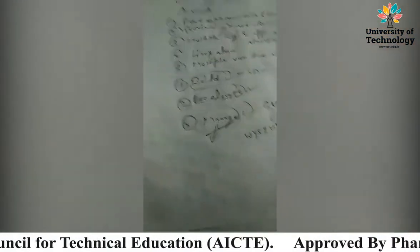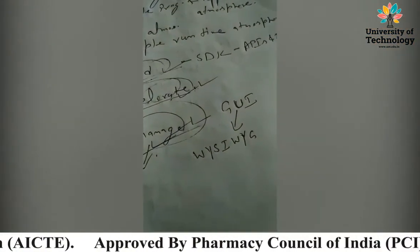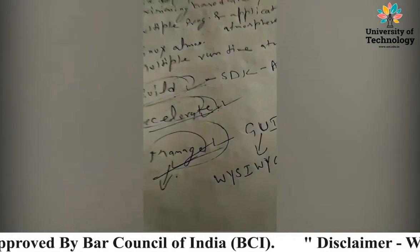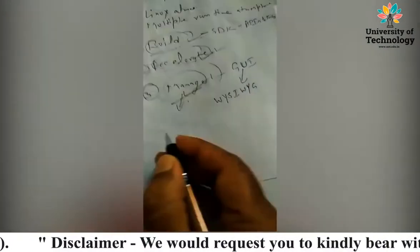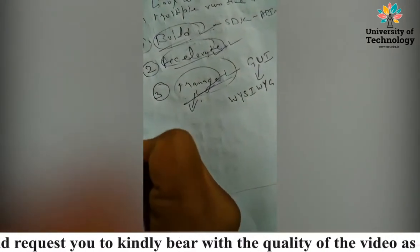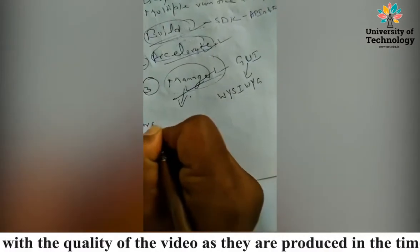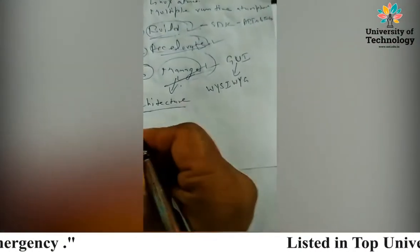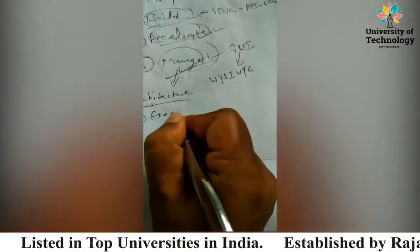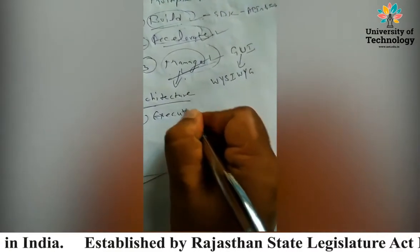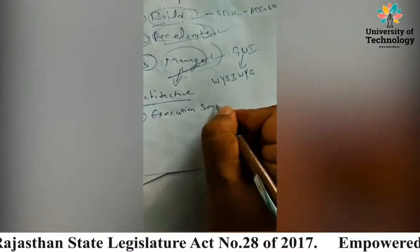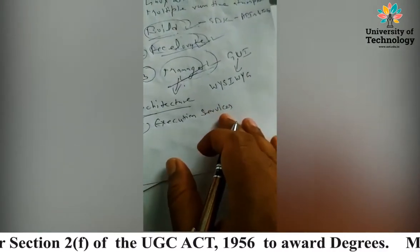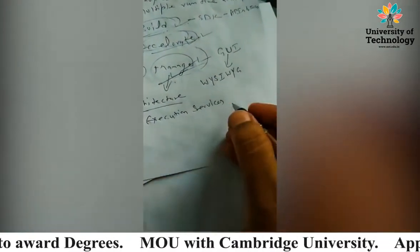So the basic things in Anika are Build, Accelerate, and Manage. Now, regarding Anika architecture: the first component is Execution Services, which contains independent banks of tasks, distributed threads, and MapReduce.